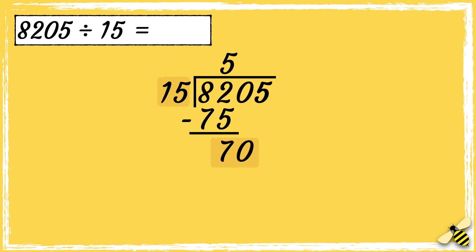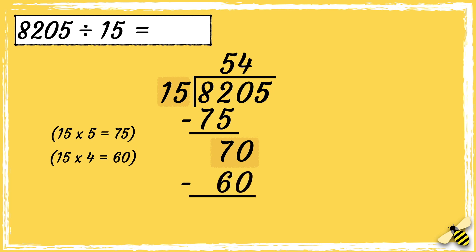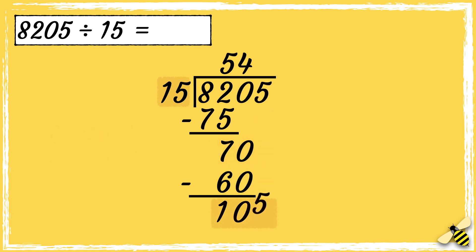Now we can work out how many times 15 goes into 70. I know that 15 times 5 is 75, which is too high, so 15 goes into 70 four times. 70 take away 60 is 10. We can now bring the next digit down.